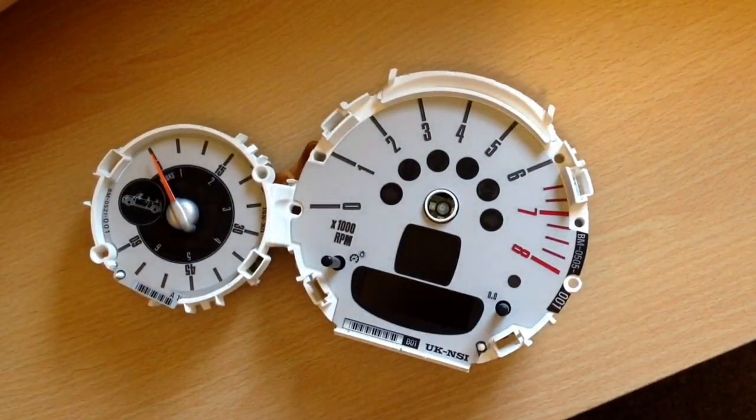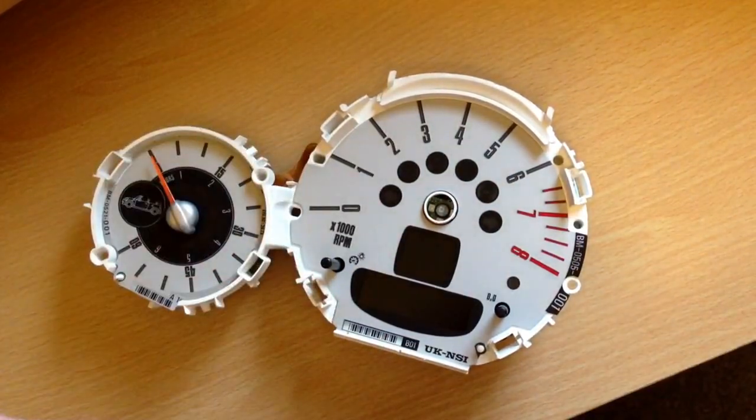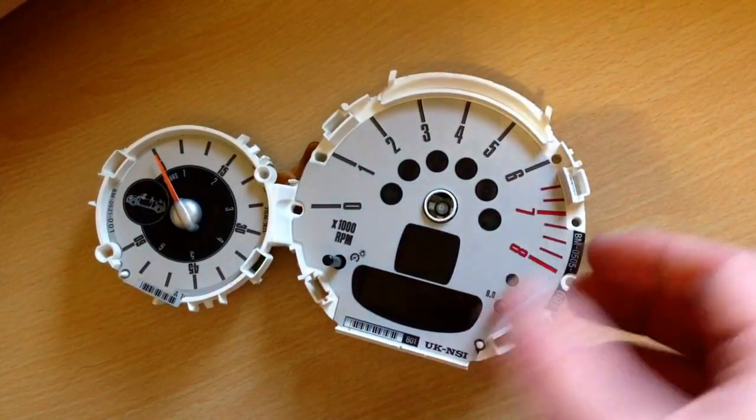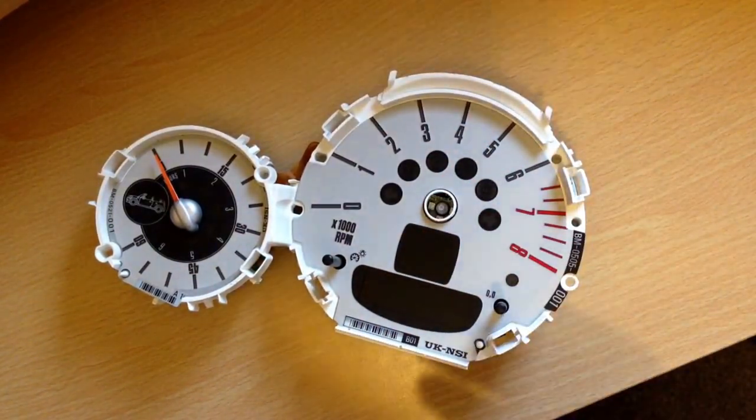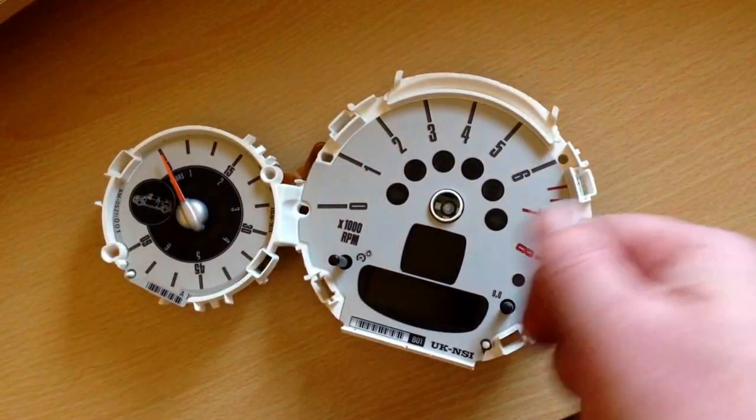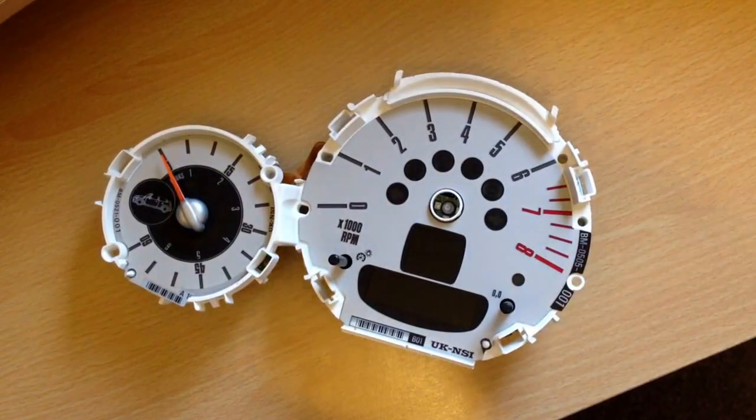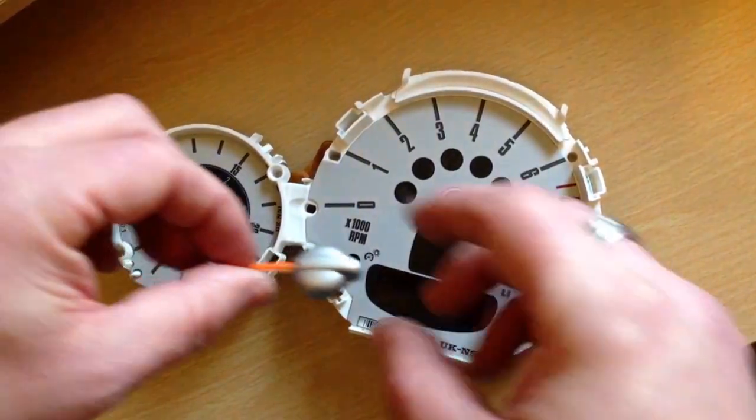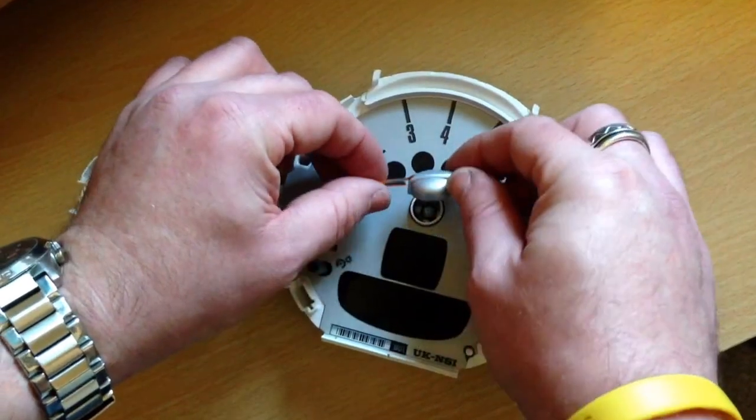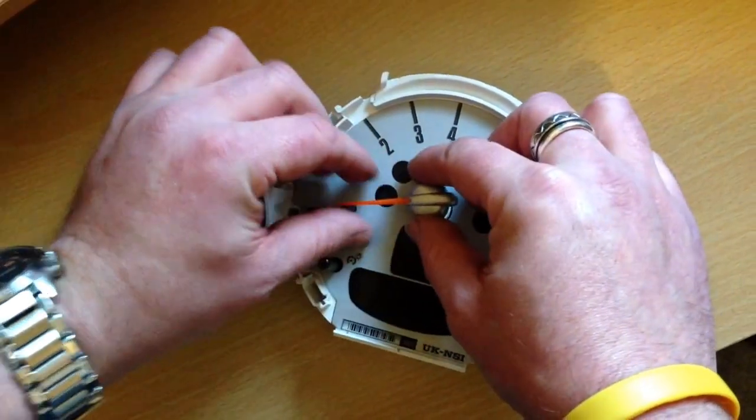Then what you do is, once you've connected it to the car and heard the motor, sometimes leave it about 5-10 seconds. Disconnect the rev counter once you've taken the ignition off. Pop your needle on the spindle.